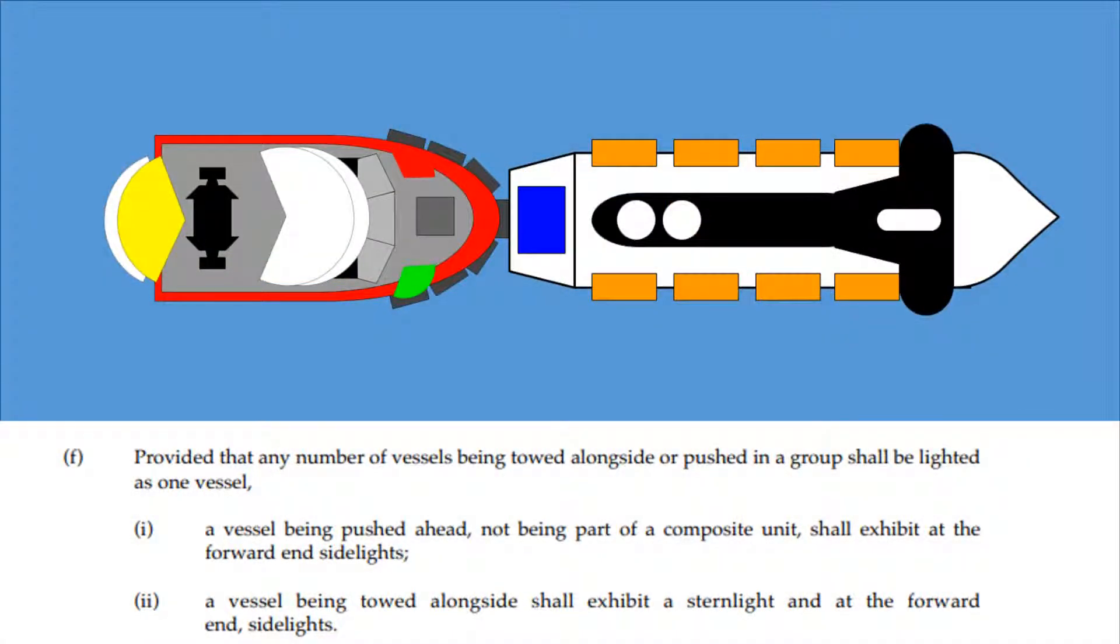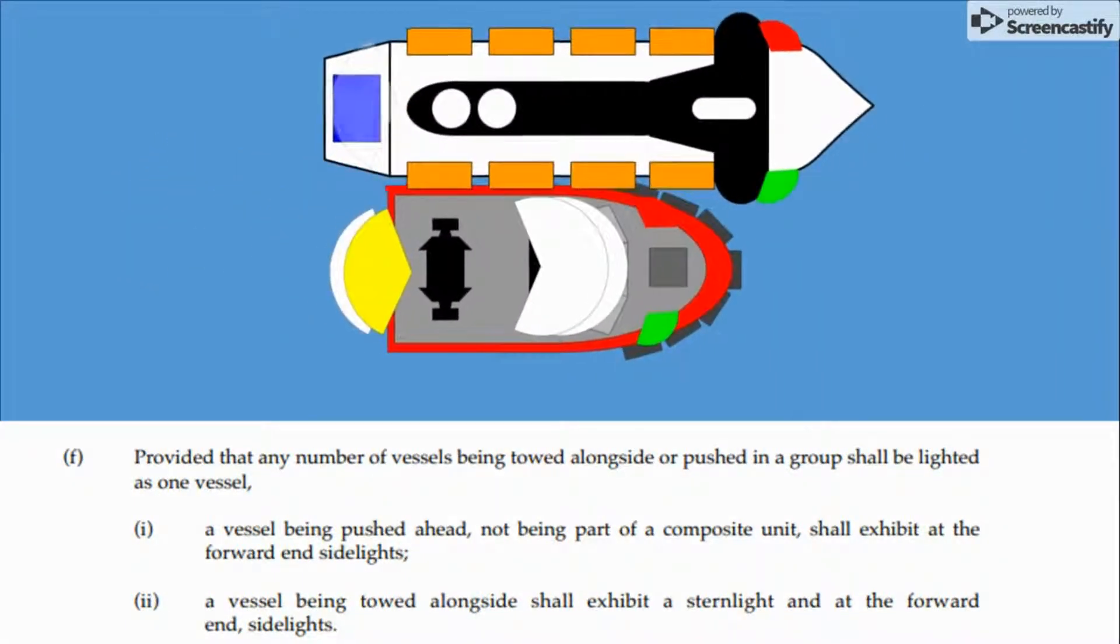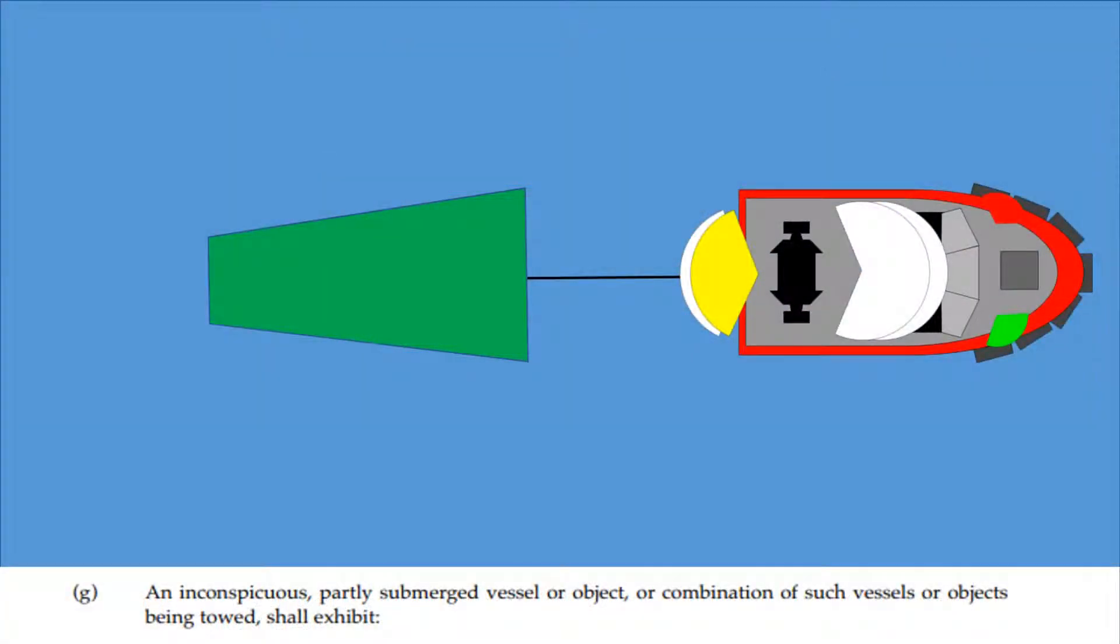Provided that any number of vessels being towed alongside or pushed in a group shall be lighted as one vessel. A vessel being pushed ahead, not being part of a composite unit, shall exhibit at the forward end sidelights. A vessel being towed alongside shall exhibit a stern light and at the forward end sidelights. Section G is all about partially submerged objects.